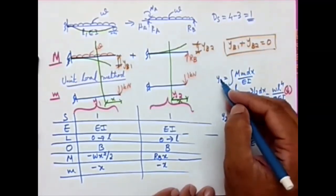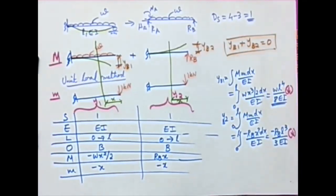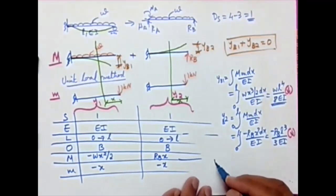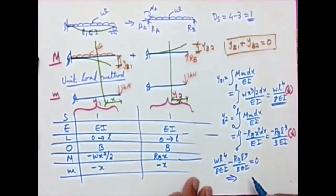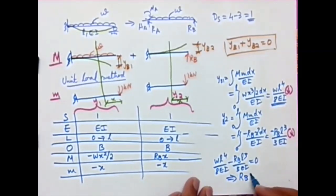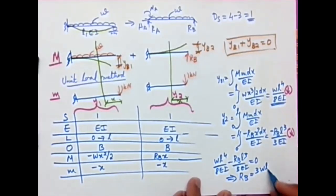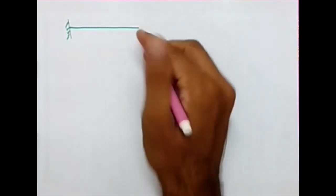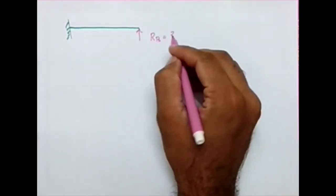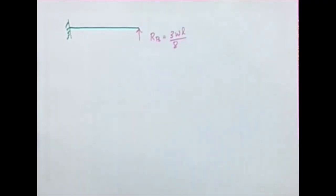Using the compatibility equation Yb1 plus Yb2 equal to 0, substituting gives WL⁴/8EI minus Rb·L³/3EI equal to 0. Solving this, we get Rb equal to 3WL/8. The EI terms cancel out, so the redundant reaction Rb equals 3WL/8.